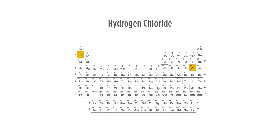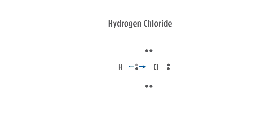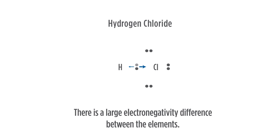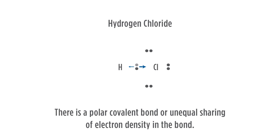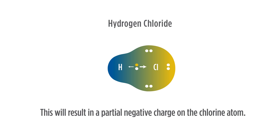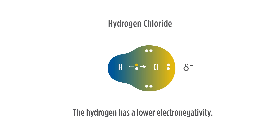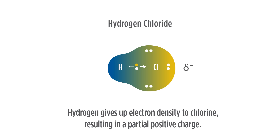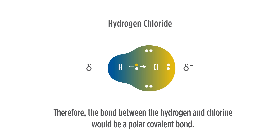Now let's consider hydrogen chloride, HCl. In this case, we see that hydrogen is on the far left of the periodic table and chlorine is on the far right. The molecule still contains a covalent bond, but there is a large electronegativity difference between the elements. This large electronegativity difference causes there to be a polar covalent bond, or unequal sharing of electron density in the bond. The chlorine has a high electronegativity and attracts more electron density to itself, resulting in a partial negative charge on the chlorine atom. The hydrogen has a lower electronegativity and gives up electron density to the chlorine, resulting in a partial positive charge. Therefore, the bond between hydrogen and chlorine would be a polar covalent bond.